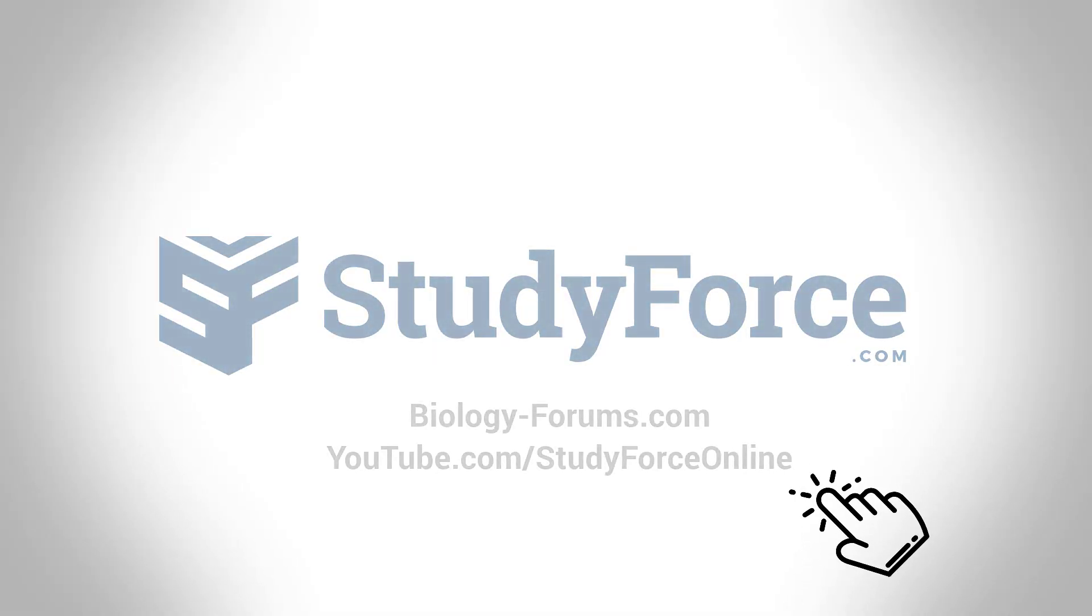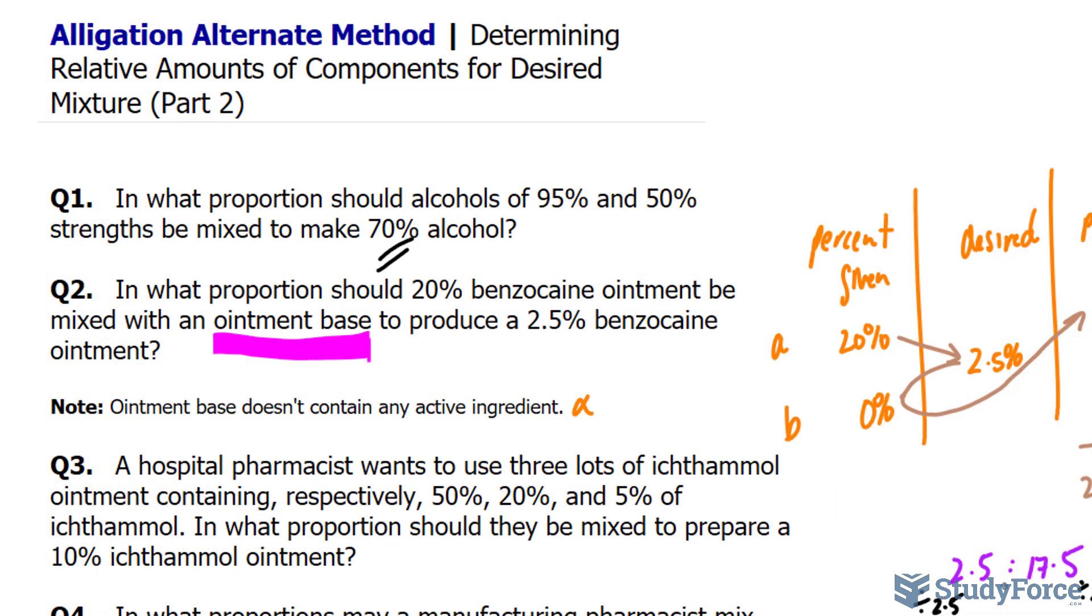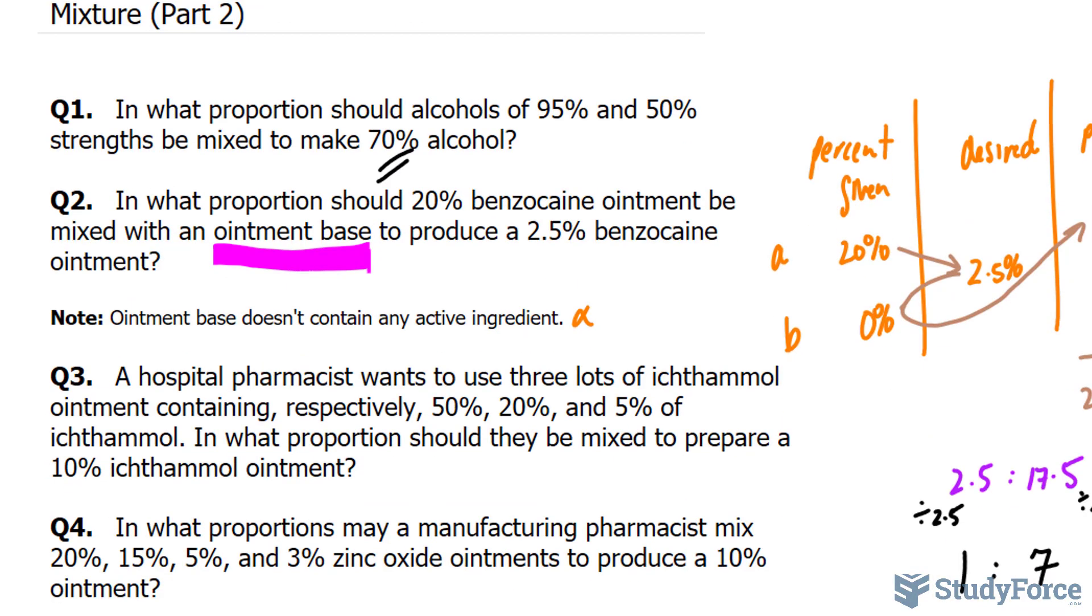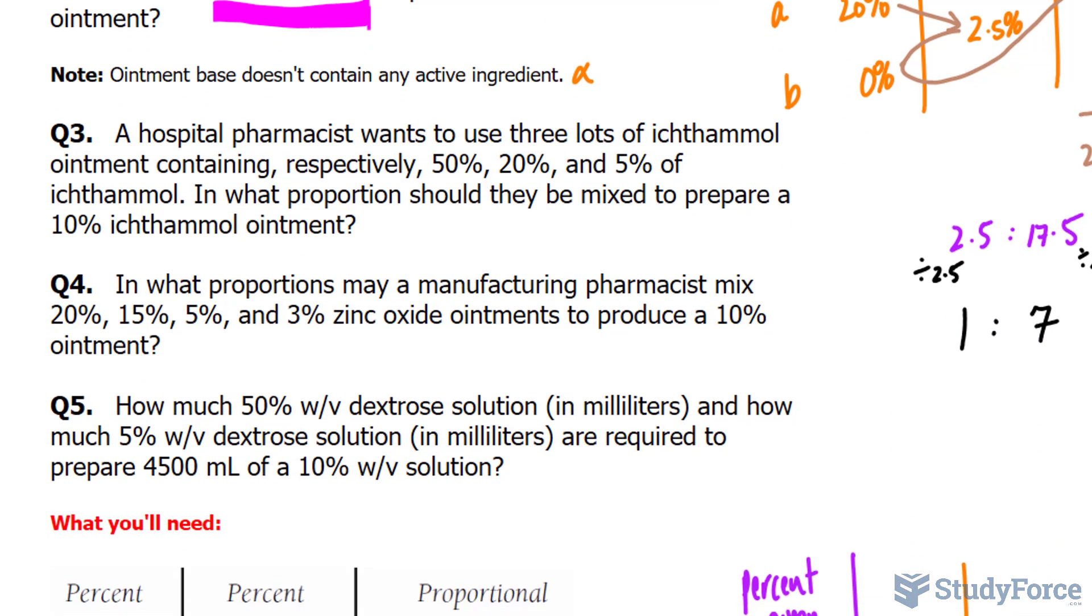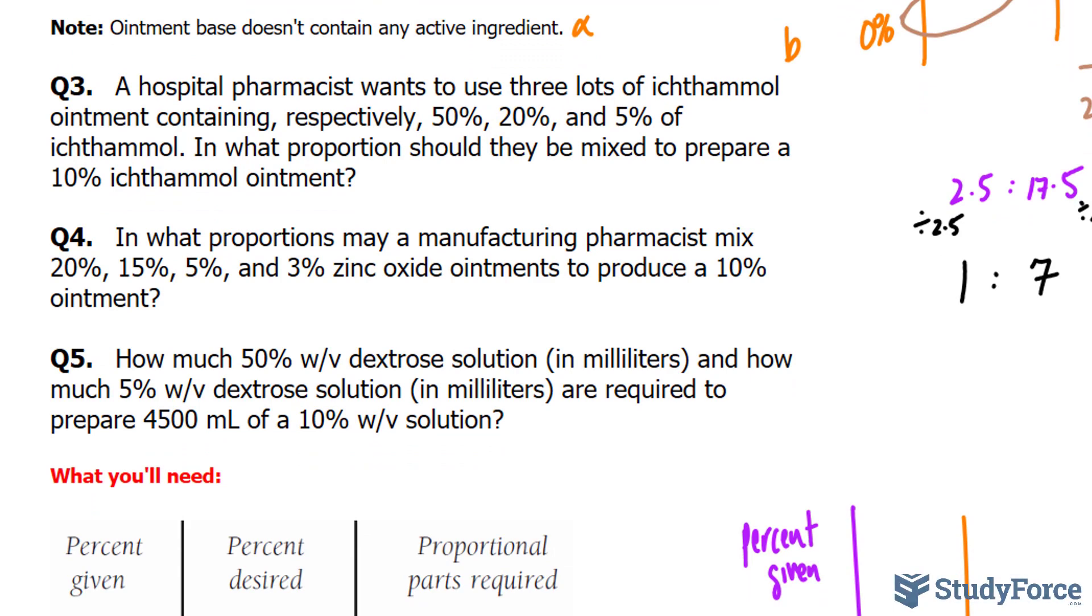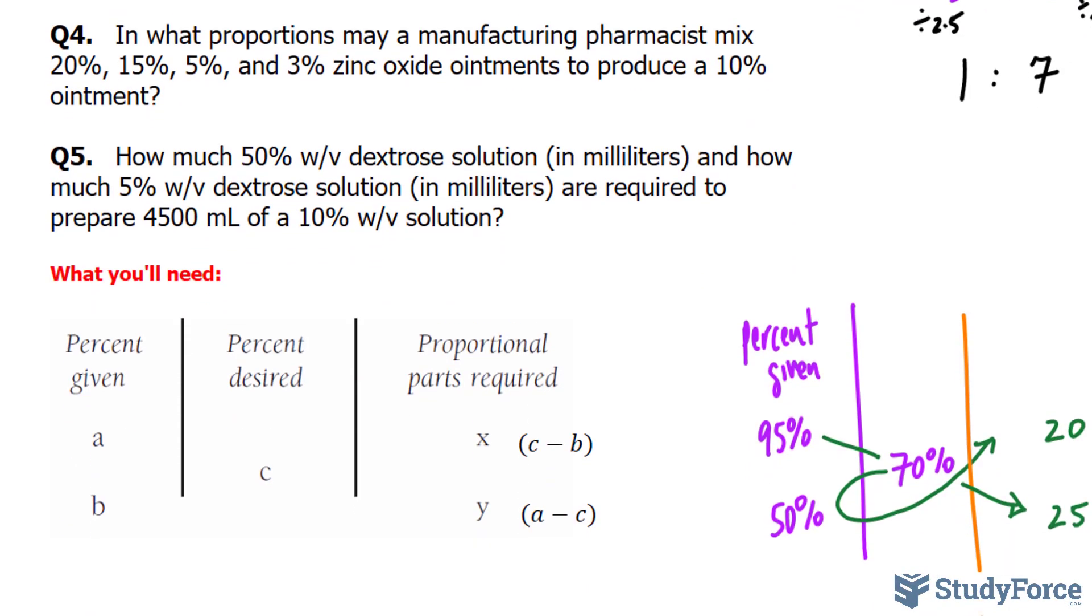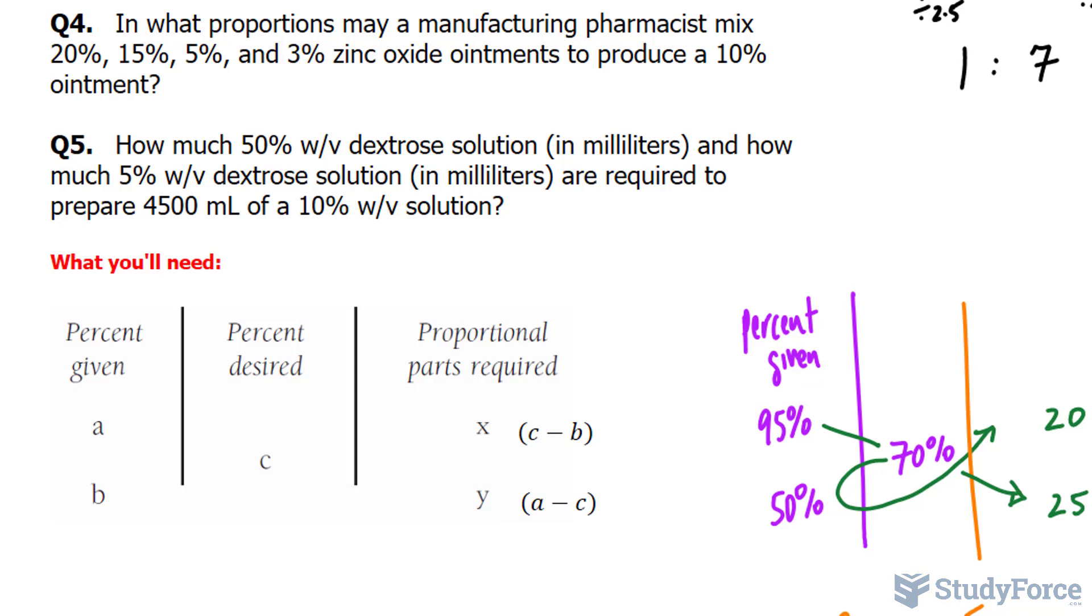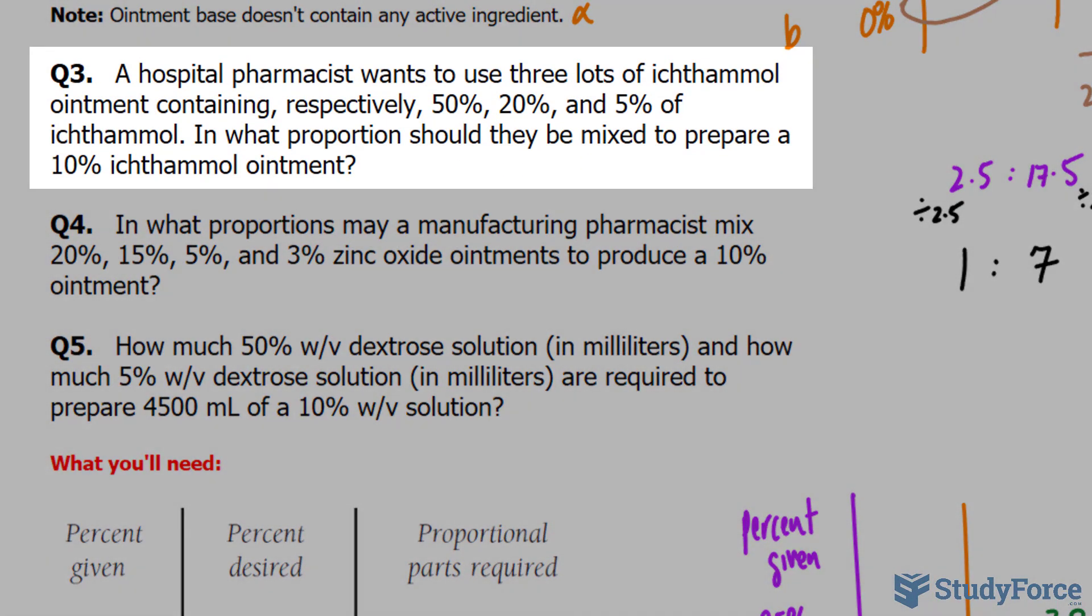Welcome back to part two of our allegation alternate method tutorial. In part one, we looked at questions one and two, and now we will finish off with questions three, four, and five. To be successful with these types of problems, you do need to know how to use this chart. I explained how to use it in part one, but again, I will remind you how it works in part two.